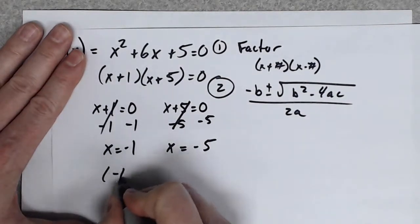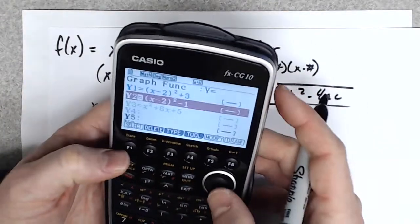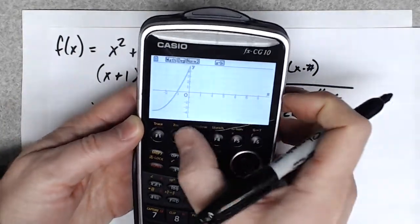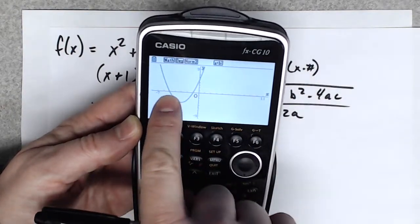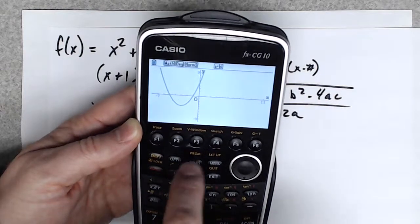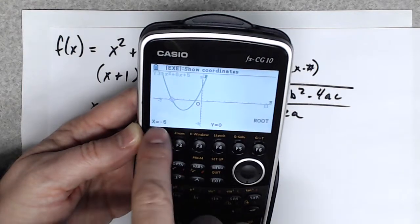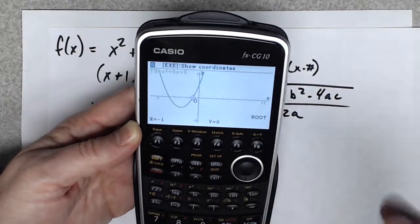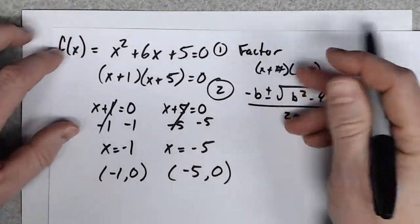So my x-intercepts are (negative 1, 0) and (negative 5, 0). I've got this graphed here too — there they are at negative 1 and negative 5. My Casio calculator finds them quickly calling them 'roots,' but show your work on the test. You need to demonstrate you can do this by hand to get any credit.